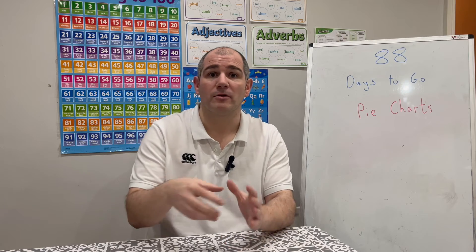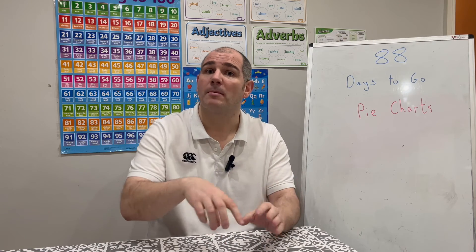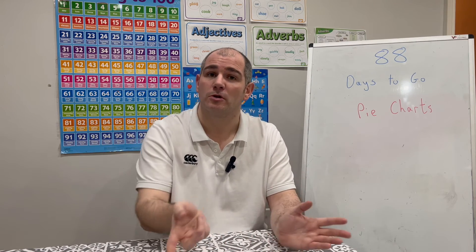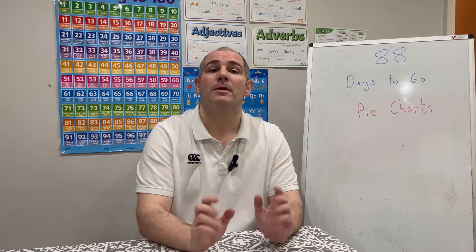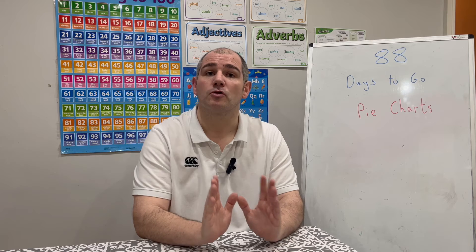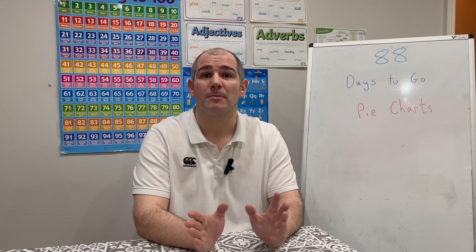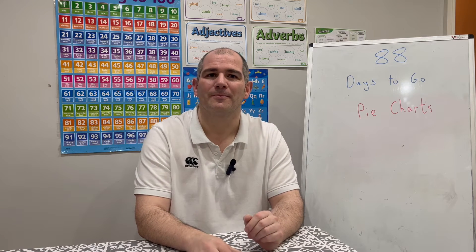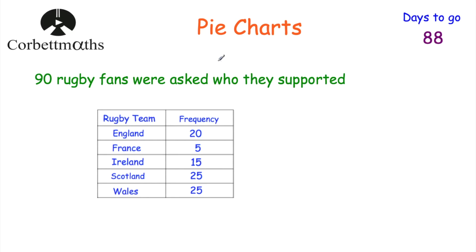If you do need to draw your own circle you can use a compass, but in this video we're going to focus on drawing pie charts and reading pie charts. So here we've got a table showing 90 rugby fans who were asked who they supported.